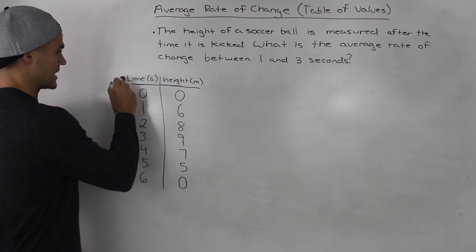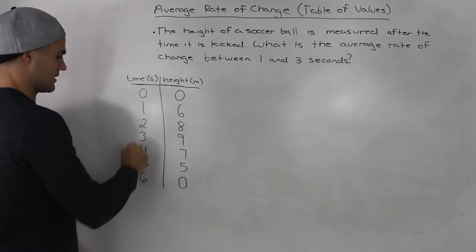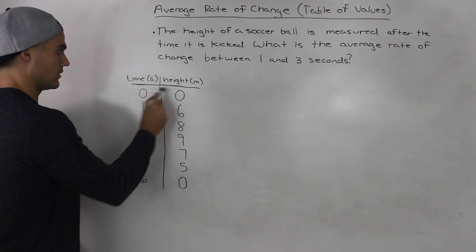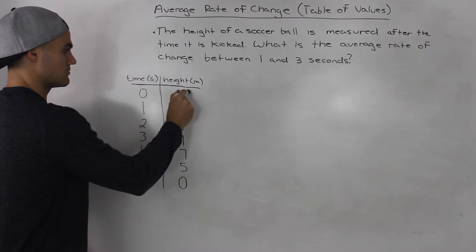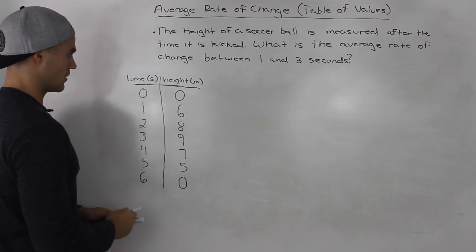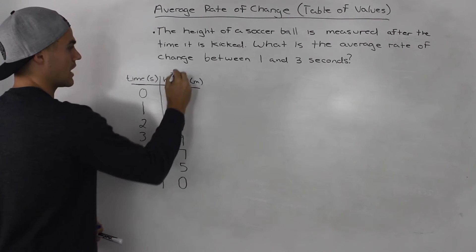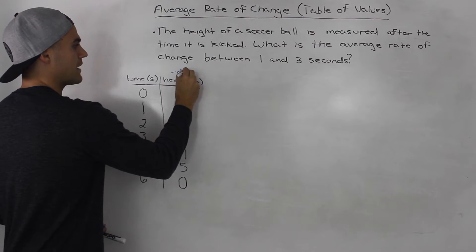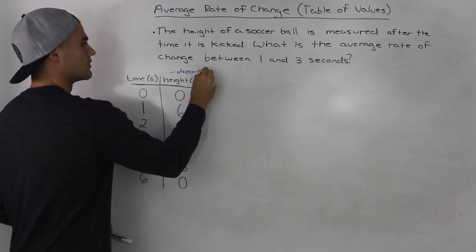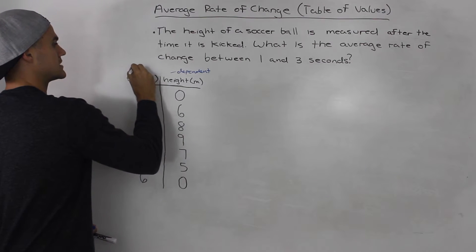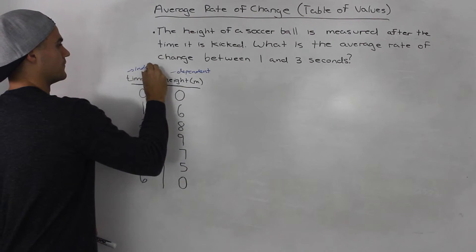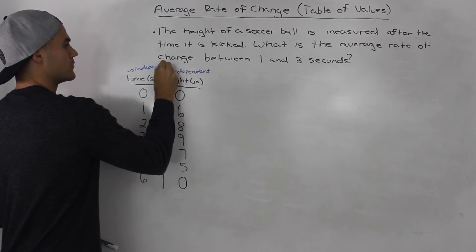Alright, so we have the time, which is measured in seconds here in this column, and the height, which is measured in meters in this column. The height is dependent on the time, so the height is the dependent variable and the time is the independent variable, as time usually is.